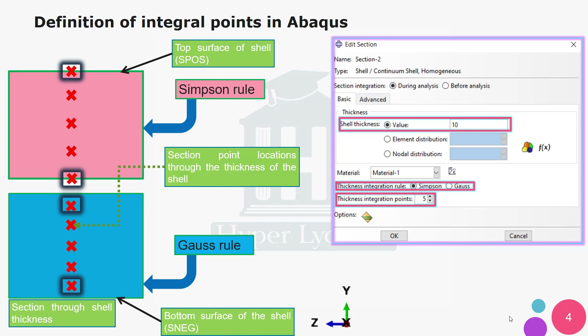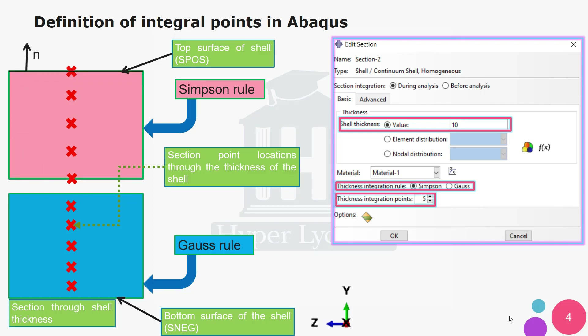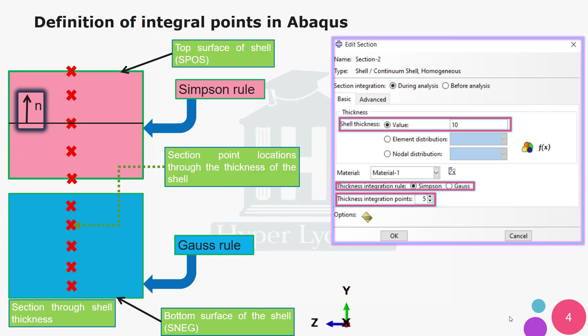The geometry of the surface that is designed in the software and then meshed is called the reference surface. In the property module of Abacus the reference surface can be on the bottom surface, with section points placed on it, or on the top surface with section points placed under it, or in the middle — in which case the mid surface and the reference surface are in the same position. In this simulation we're going to use this middle surface method.